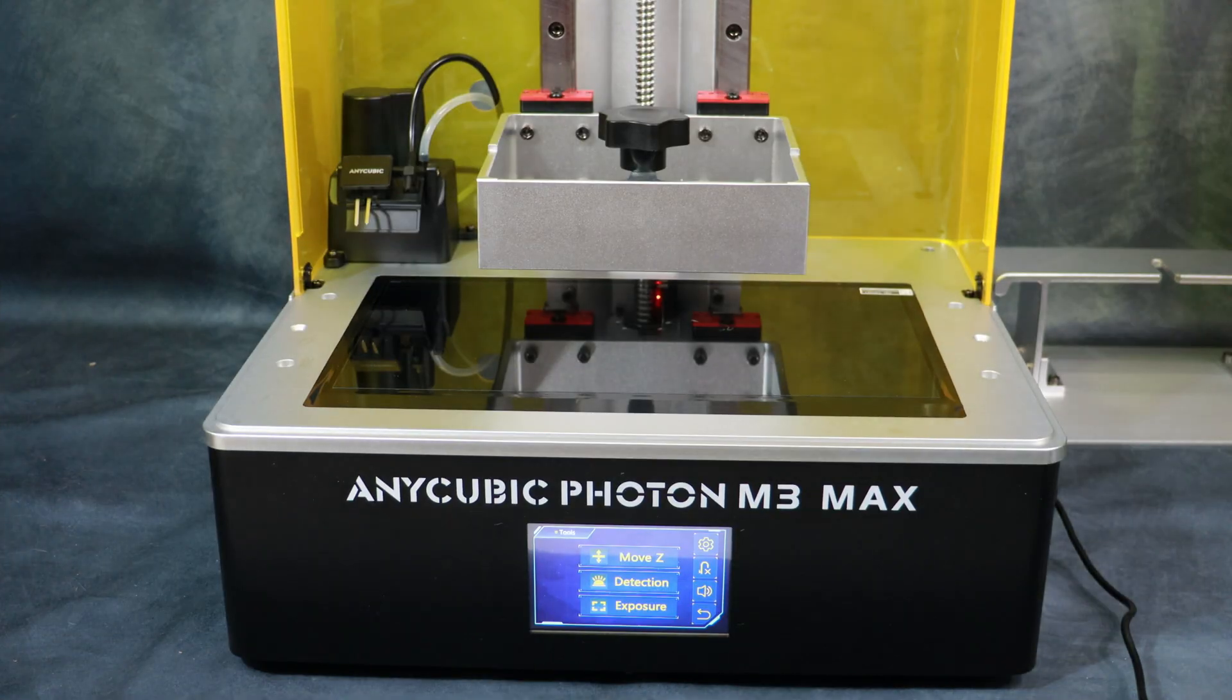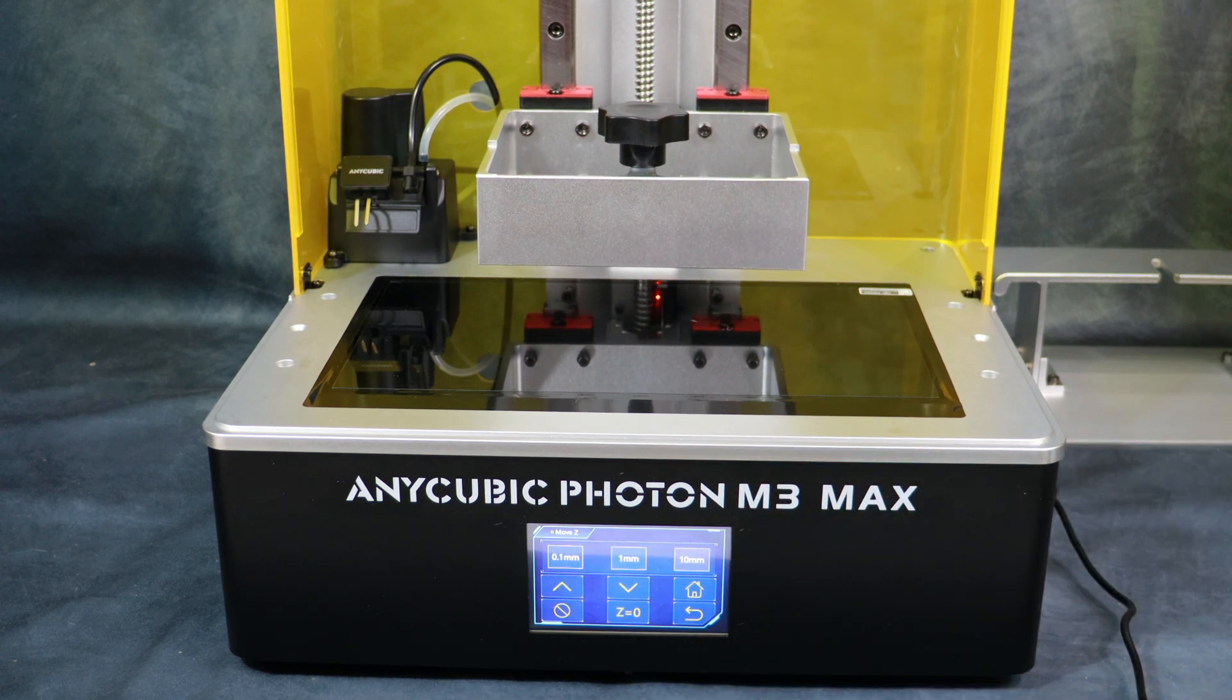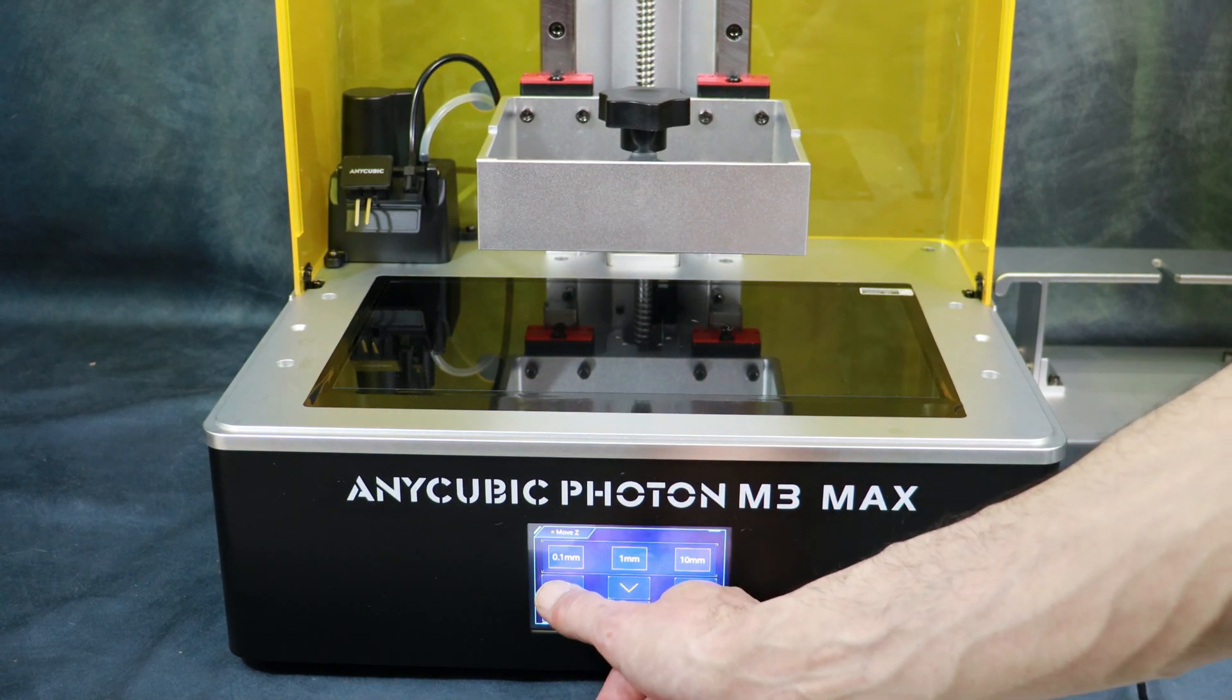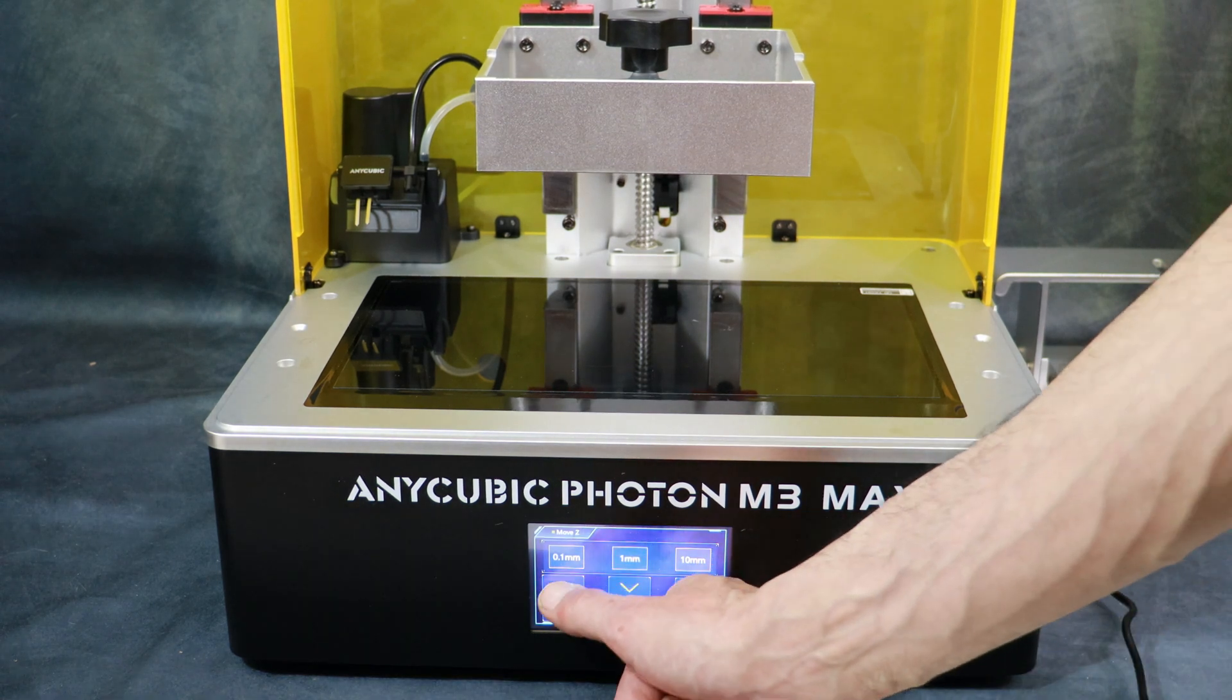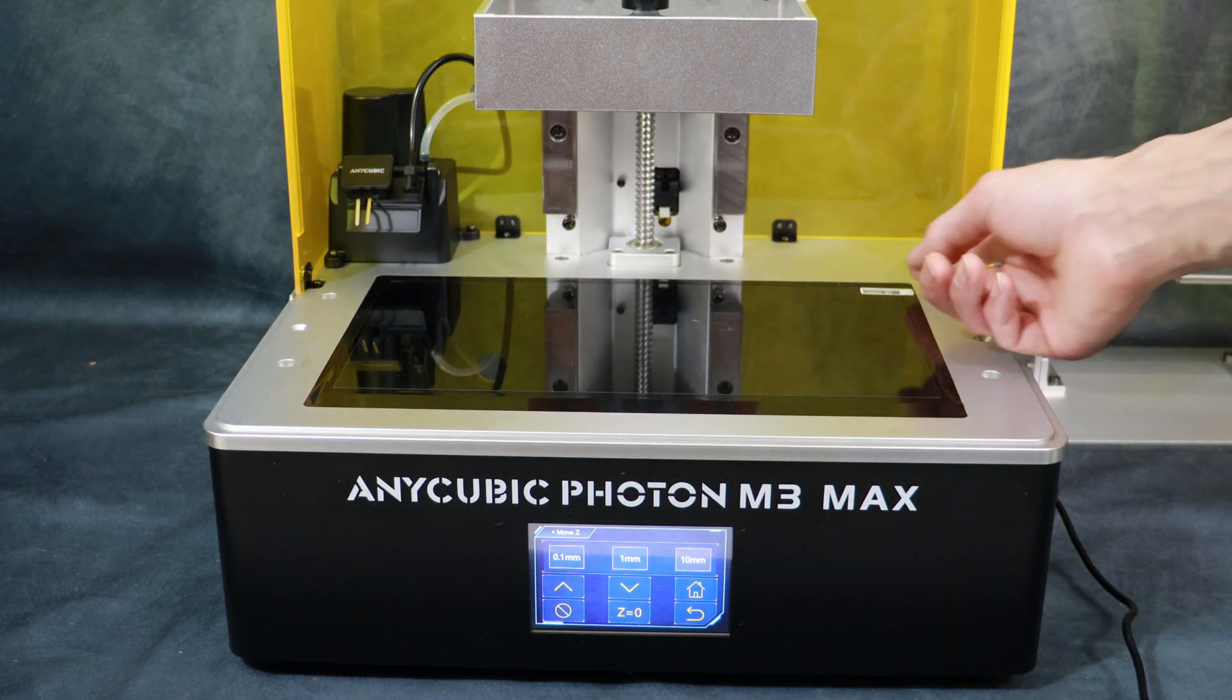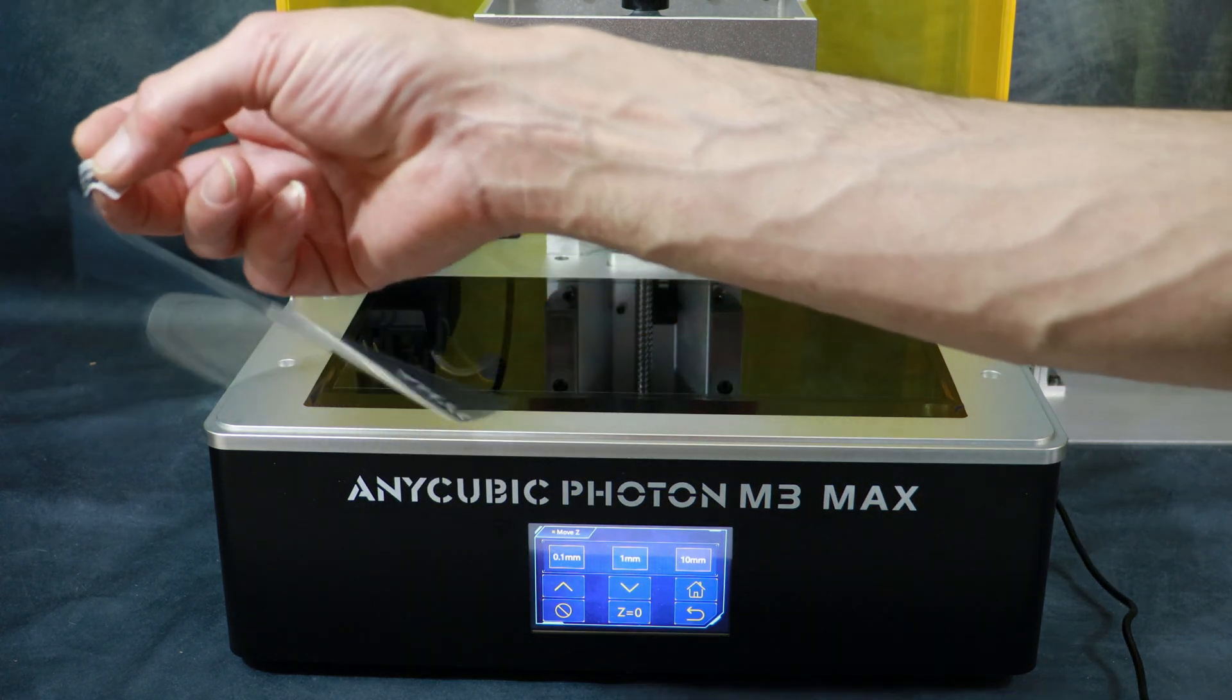Now we're getting close to being done. Next thing we're going to do is we're going to raise the frame that holds the build platform so we can install it. Be sure to raise it a good amount. The next thing we're going to do is remove the protective covering on the LCD itself. Once we have this removed the next thing we're going to do is install the build platform.